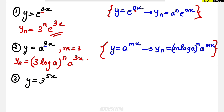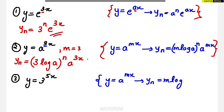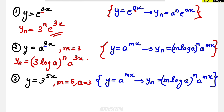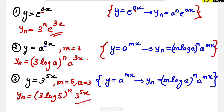For the third problem, y = 3^(5x). This can be related to the same formula y = a^(mx), where a = 3 and m = 5. Write the formula first, then substitute: the nth derivative equals (m·log a)^n · a^(mx), which gives (5·log 3)^n · 3^(5x). This is the final answer.